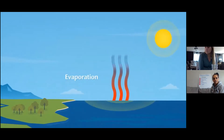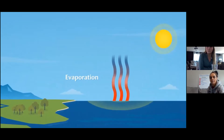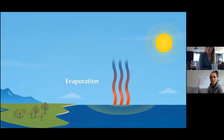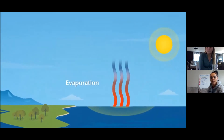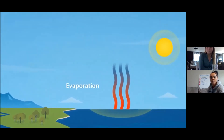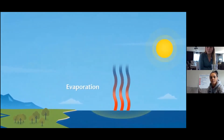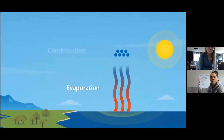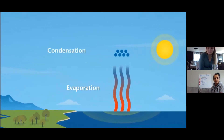Because gases are lighter than liquids, water vapor rises up into the sky. The further you move up and away from the Earth's surface, the colder the temperature gets. So in the sky, the water vapor cools and changes back into tiny water droplets. This change is called condensation and is the opposite of evaporation.